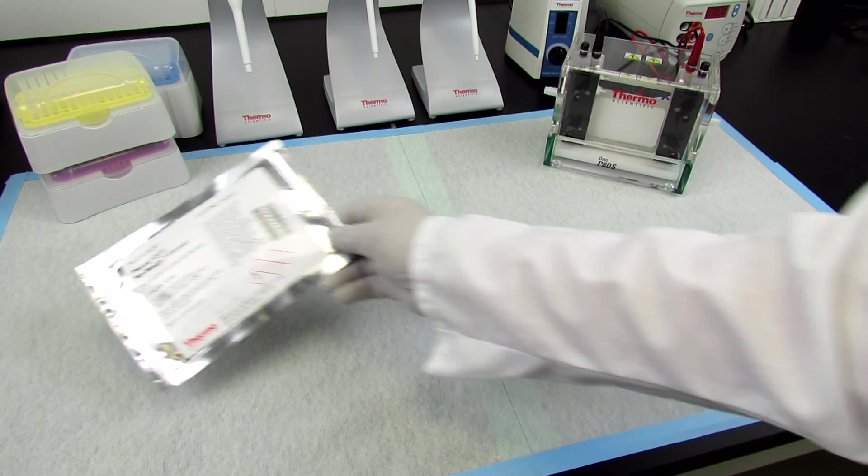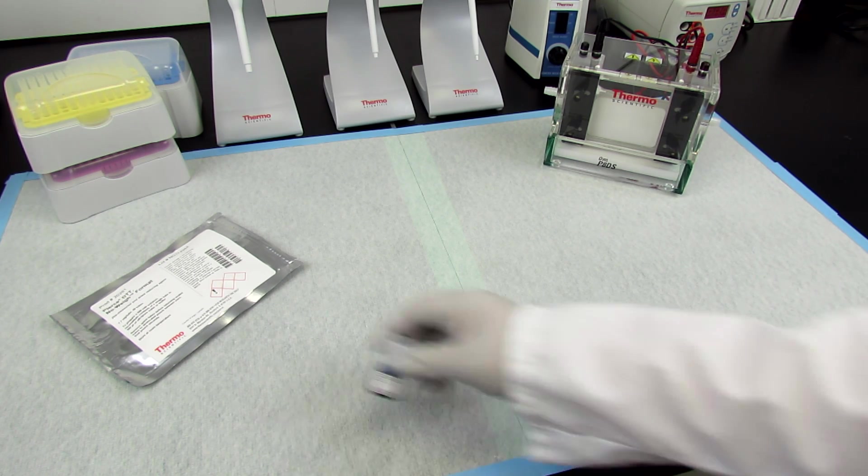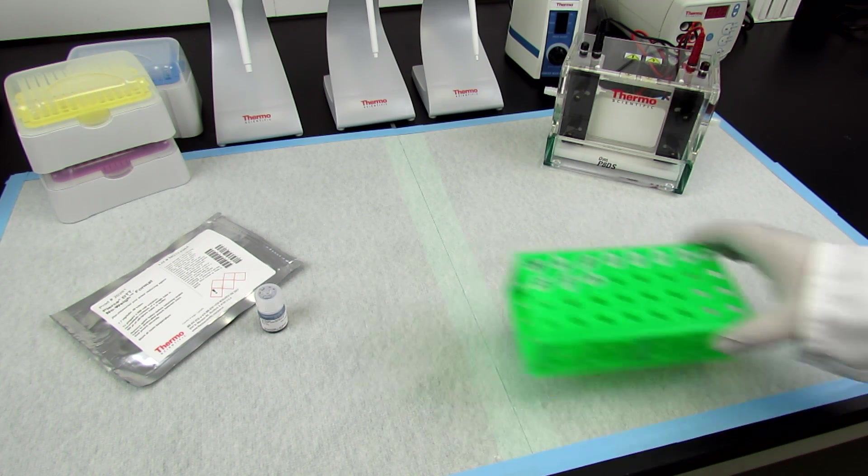The first step in many protein analytical methods, including Western blot analysis, is to separate the proteins in a sample by gel electrophoresis.